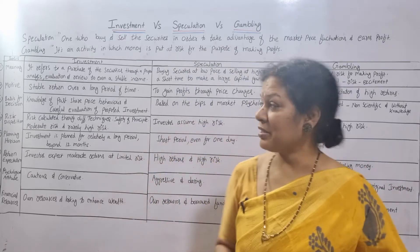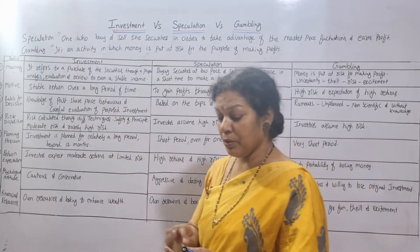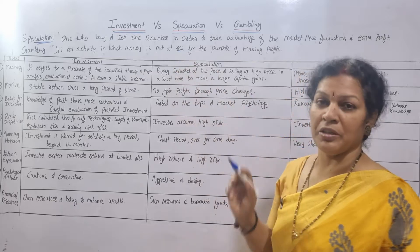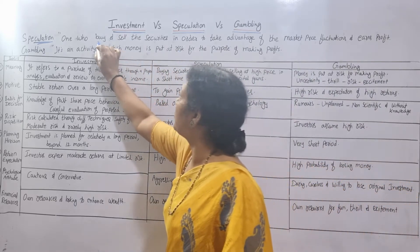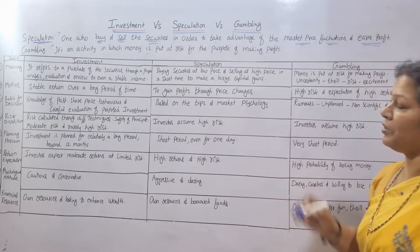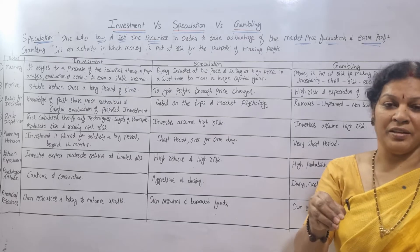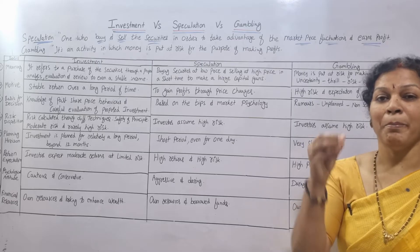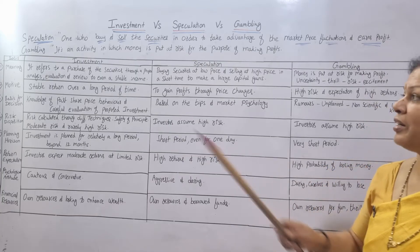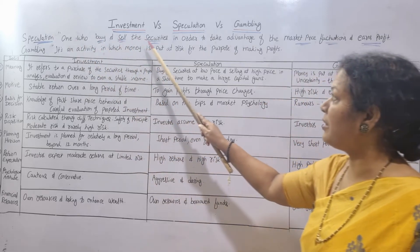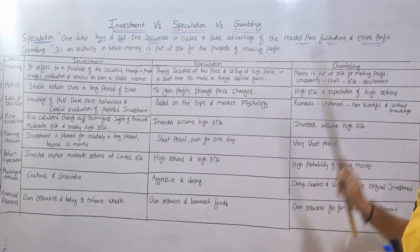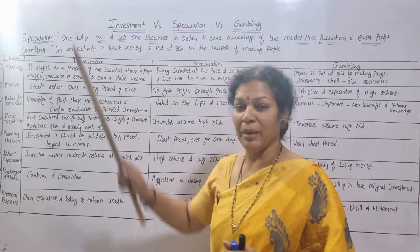Speculation is defined as: one who buys and sells securities in order to take advantage of market price fluctuations and earns profit. The activity is to buy when the market price is low and sell when the market price is high, thereby earning profit through price fluctuations.